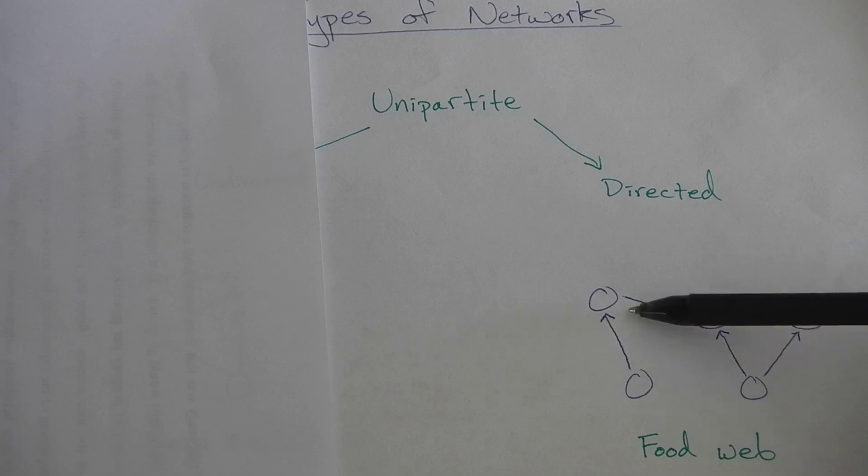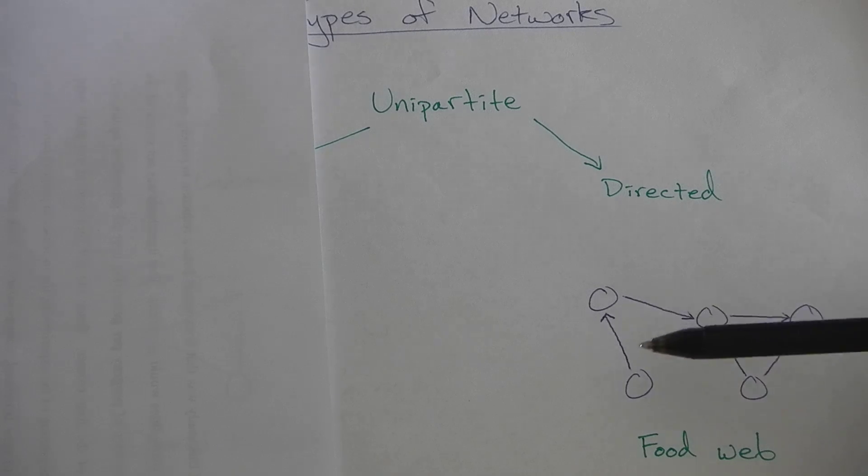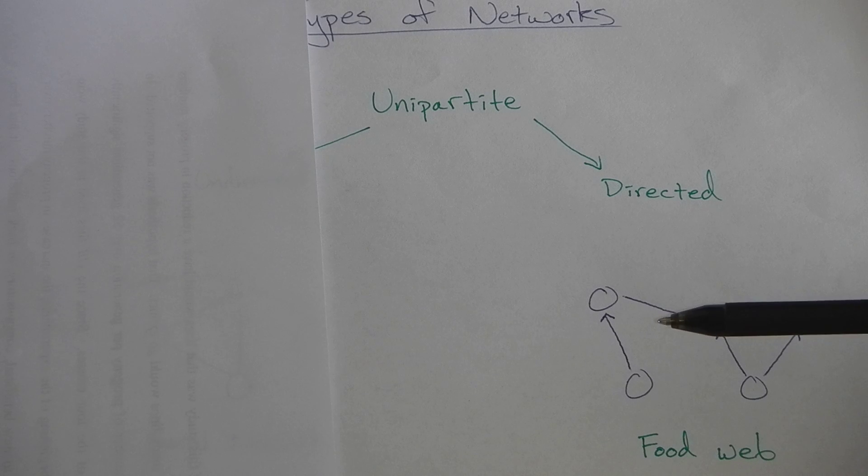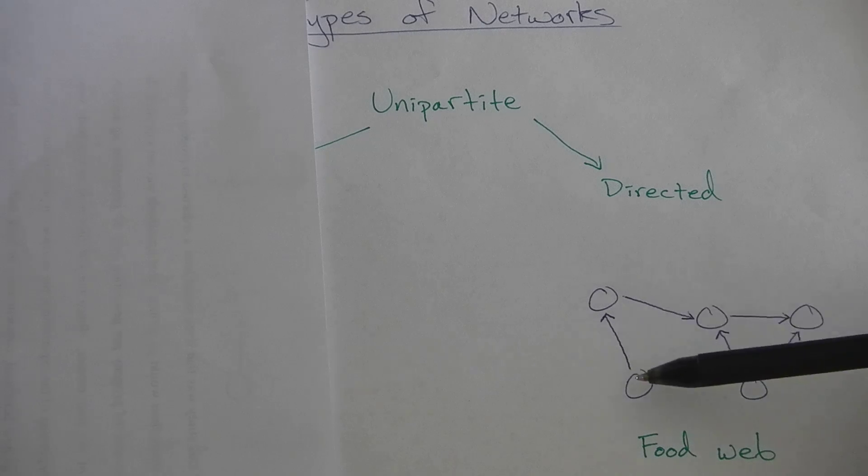What I mean by a directed network is that the links between nodes within this network have direction. Typically for a food web, we denote this direction as a feeding interaction in terms of the flow of energy between nodes.